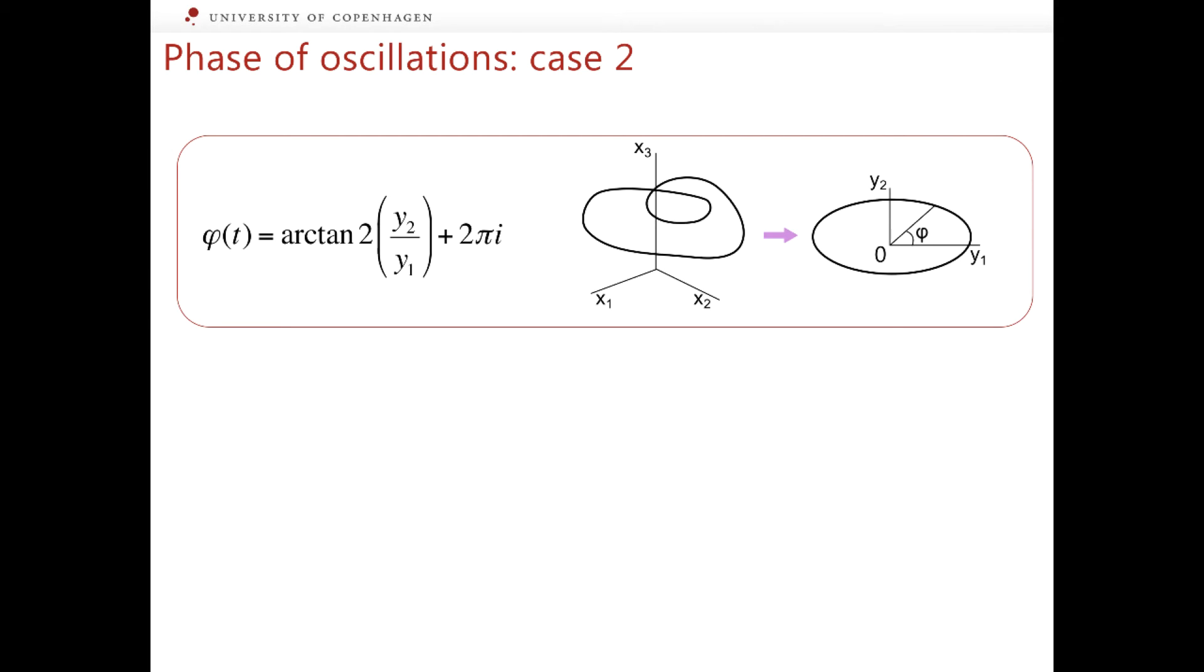Then, for every point on this simple closed curve we can introduce an angle φ according to the formula shown. Here, y_1 and y_2 are the coordinates of the point on our simple closed curve on the plane and arctan2 is an extended arctan function. Let me explain how it works.